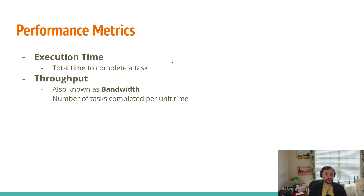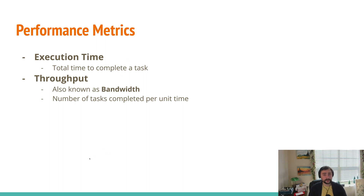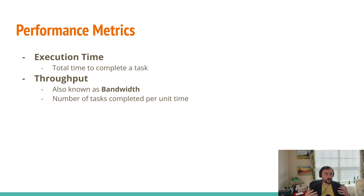We can improve our execution time, and this will also improve our throughput. If we improve execution time from 10 seconds to 5 seconds, we've essentially doubled our throughput — we can now run two tasks in 10 seconds instead of just one. However, if we improve our throughput, this doesn't improve our execution time. Instead of running all tasks on a single processor one after another, we could run them across two processors. Maybe two processors can each run a task that takes 10 seconds — we haven't made that individual task any faster, but we can run two of them at the same time.